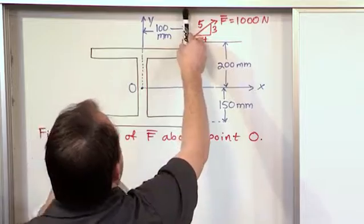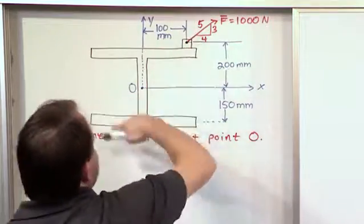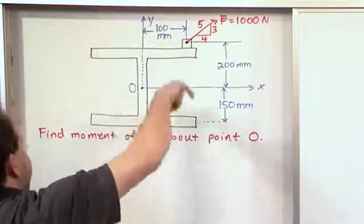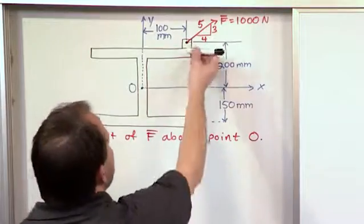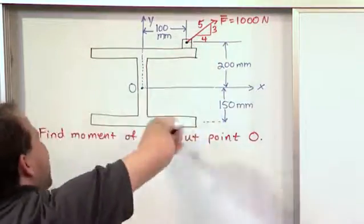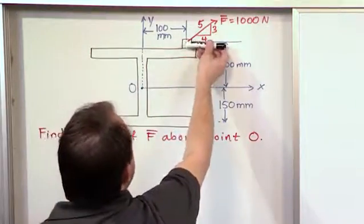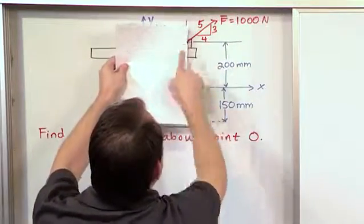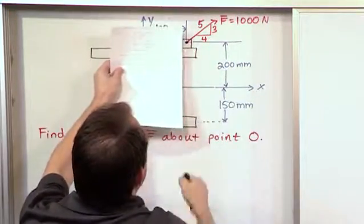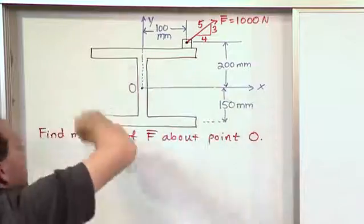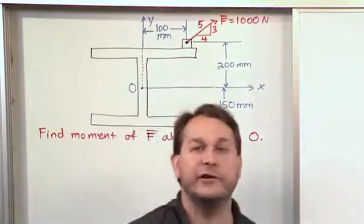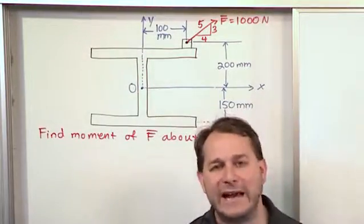The vertical force times the 100, which would be spinning it this way, which would be a positive moment. And then the horizontal force would be trying to spin it in the opposite direction. And it would be this times this distance here, which is 200 millimeters or 0.2 meters. And that would be the moment trying to spin it in the opposite direction. And since it's going the other way, that would be a negative moment.